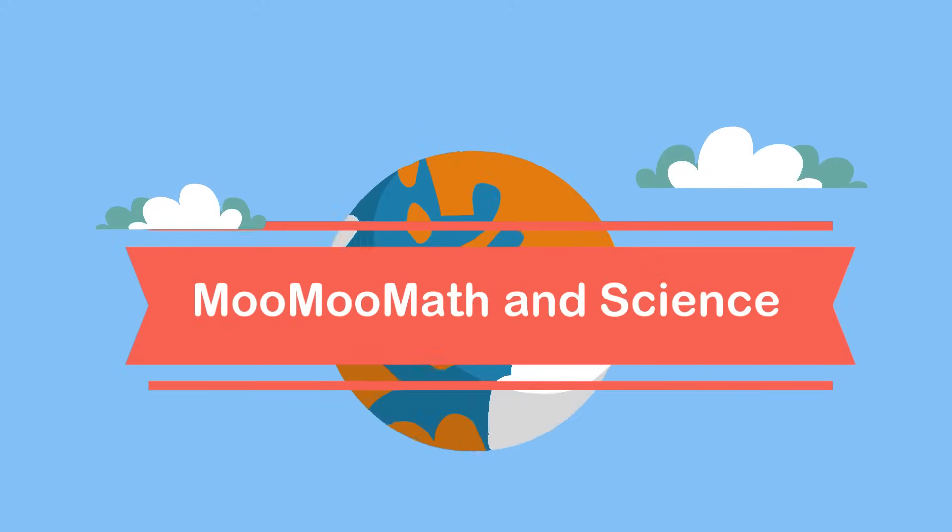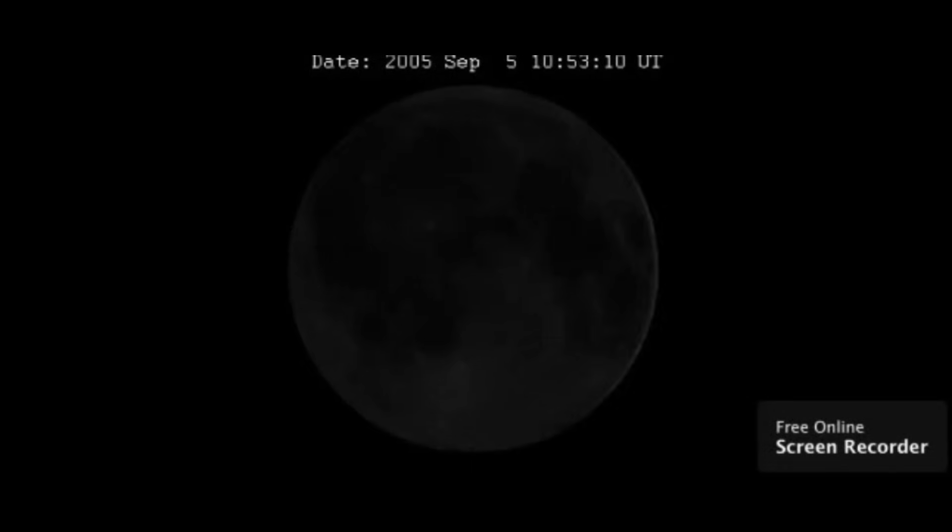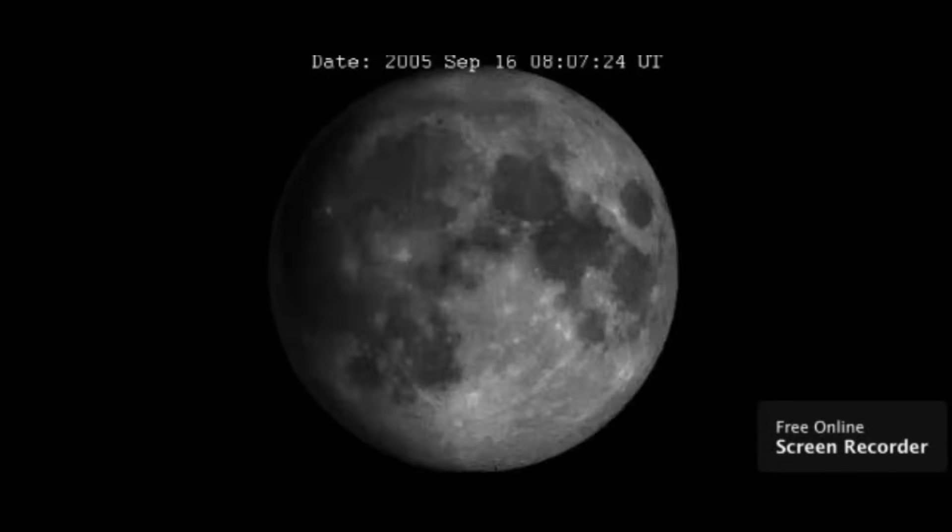The moon revolves around the earth roughly every 27 days. As it revolves around the earth, it goes through phases. Here's what these phases look like.